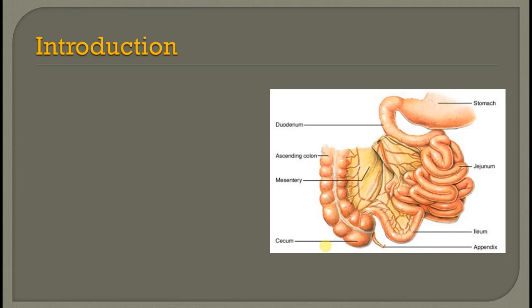Coming to the small intestine, the extent of the small intestine starts from the duodenum to the terminal part of the ileum, that is the ileocecal junction.